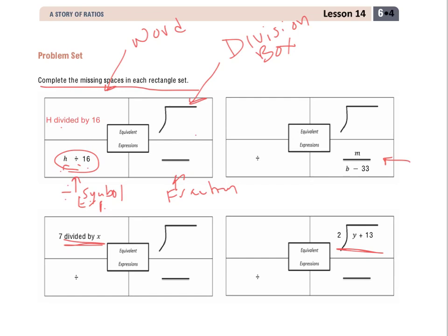And then when I go to plug these in to my division box up in the top right, I know H is my dividend. It's the number being divided. So that's got to go on the inside, which means 16 is my divisor.